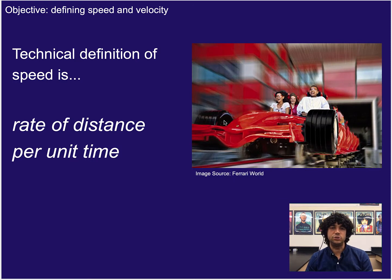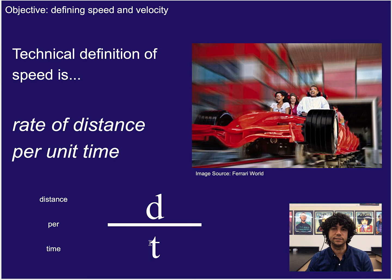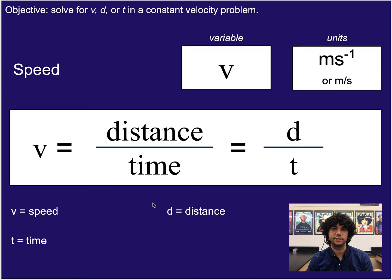We're going to use those two things to help us talk about speed and velocity. The technical definition of speed is the rate of distance per unit time, so we can already start to think that speed is probably not going to factor in direction, since it's based on distance and not displacement. That definition of rate of distance per unit time means you have distance divided by time — where 'per' tells you what is on the denominator — so here it's per time.